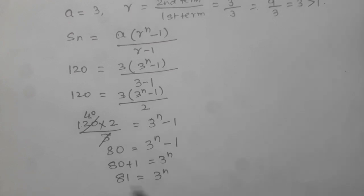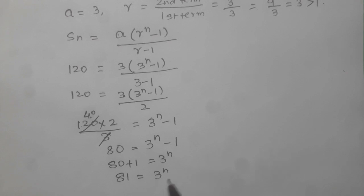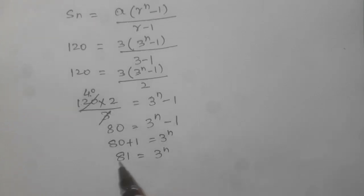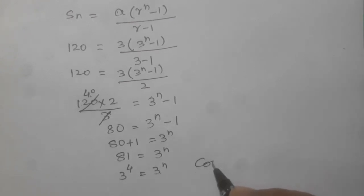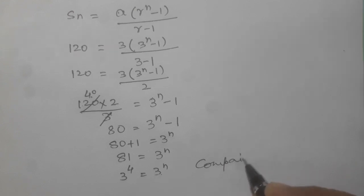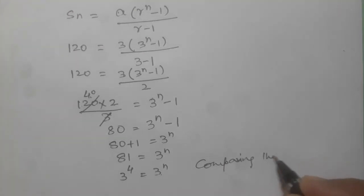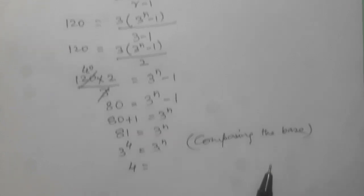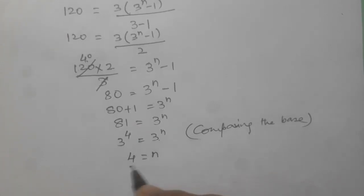We have to make the base same so that the value of n we can find. So we find that 81 is equal to 3 power 4. 3 multiplied by 3 multiplied by 3 multiplied by 3 will be 81 equal to 3 power n. Comparing the base, as the base is same, 3 and 3, so 4 is equal to n. Hence n equal to 4.